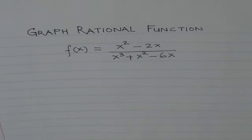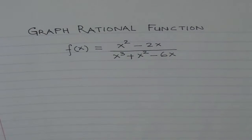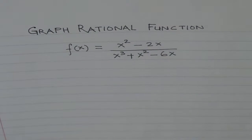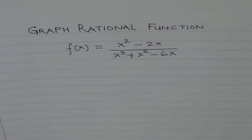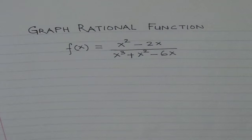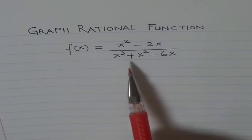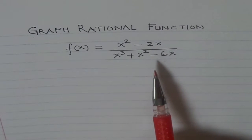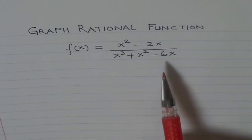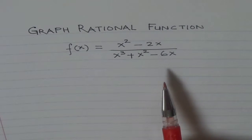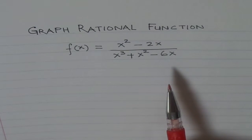Hello, let's try to understand how to graph a rational function. A rational function, as you know, is a ratio of polynomials, and the denominator cannot be equal to 0, because that makes the rational function undefined.